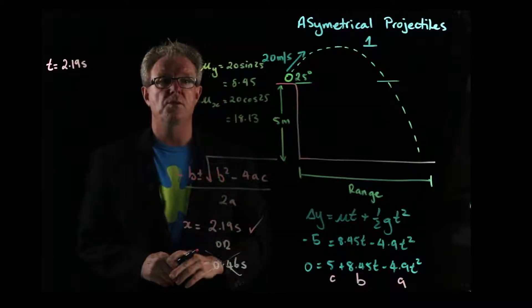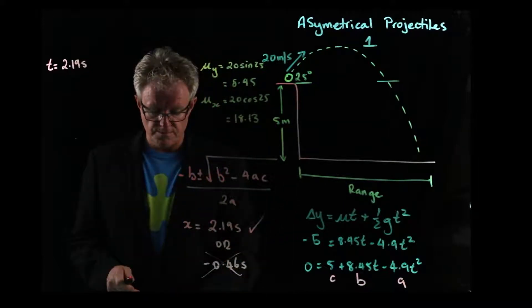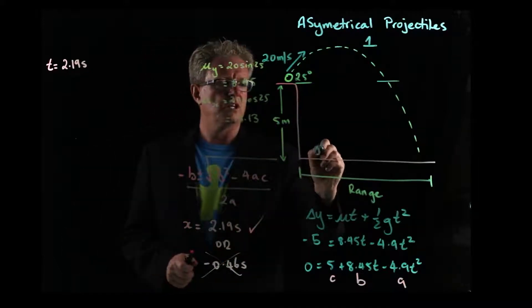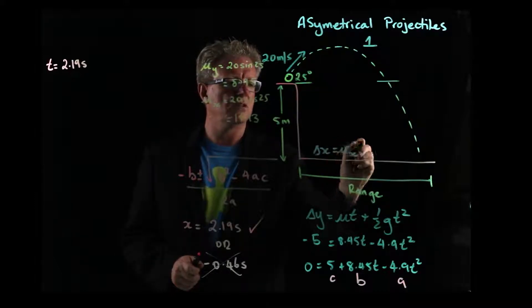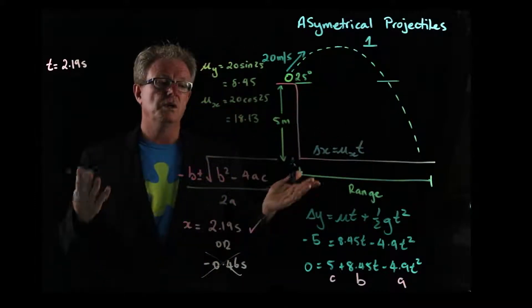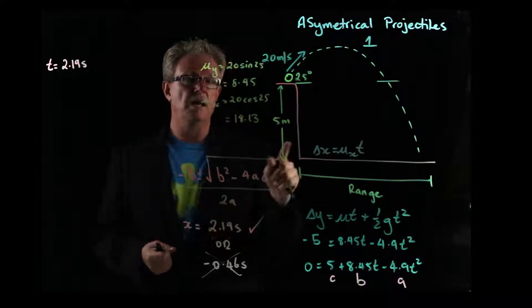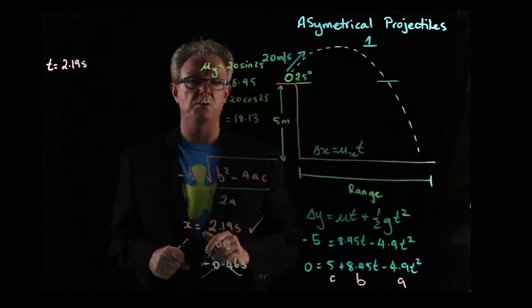What about the range? How do we work out the range? Well, remember our range equation. Our range equation was the change in x is equal to ux times t. Well, we do know ux. We found it up here, and we now know t. So now we can find out what the range is.